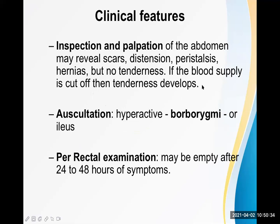For abdominal examination we start with inspection, then palpation, percussion, and auscultation. On inspection and palpation the abdomen may reveal scars, distension, visible peristalsis, and hernias, but usually no tenderness — unless the blood supply is cut off, in which case tenderness may develop.